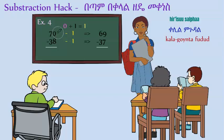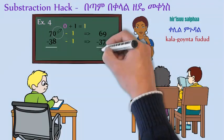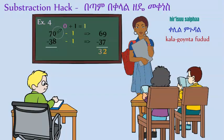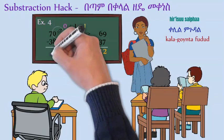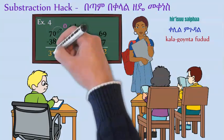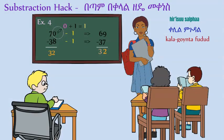9 minus 7 is 2, and 6 minus 3 is 3. That's how you confirm if your answer is correct.